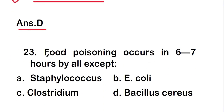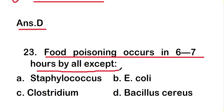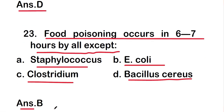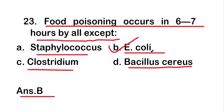Next question: food poisoning occurs in six to seven hours by all except — Staphylococcus, E. coli, Clostridium, or Bacillus cereus. The right answer is option B — E. coli. Food poisoning occurs in six to seven hours by all except E. coli.